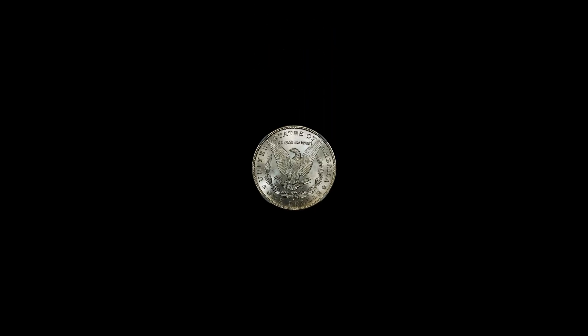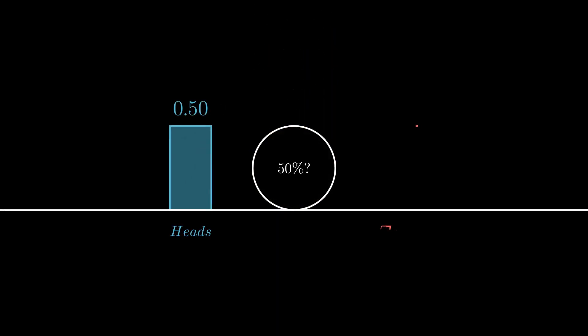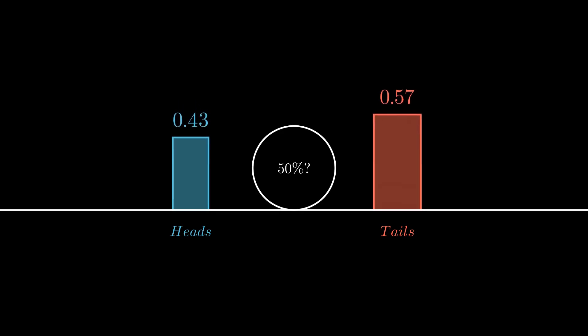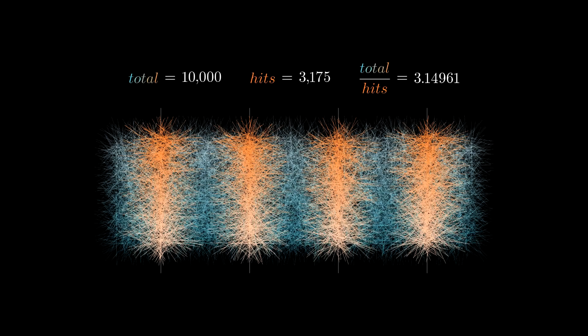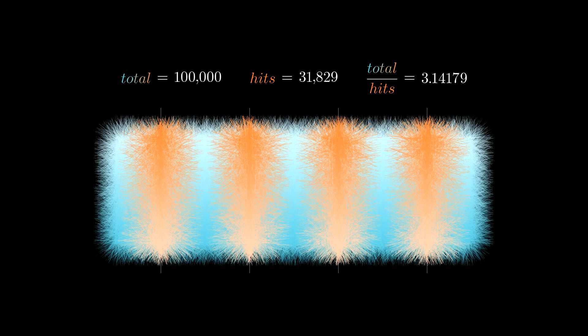The issue with this approach in approximating pi is that it relies on probability and chance. For the 10,000 needle test, I had to repeat this simulation about 10 times to get this value. And for the 100,000 test, I had to repeat this almost 50 times to get this value.